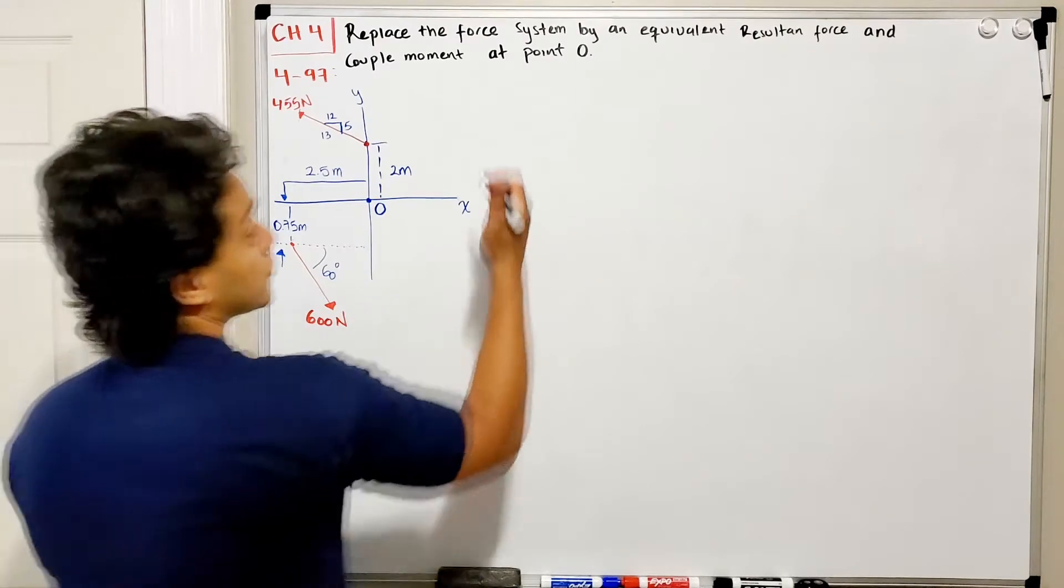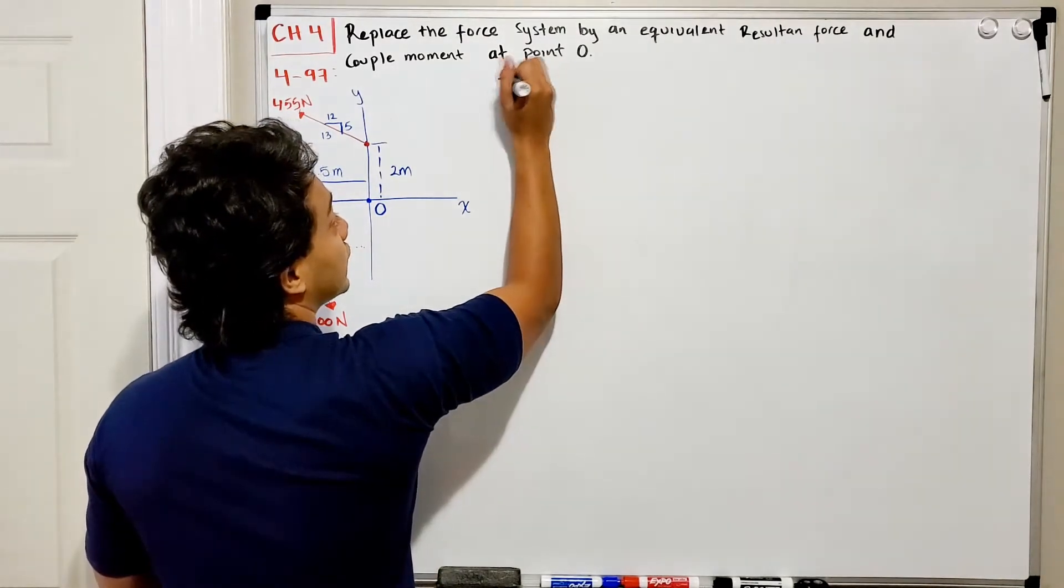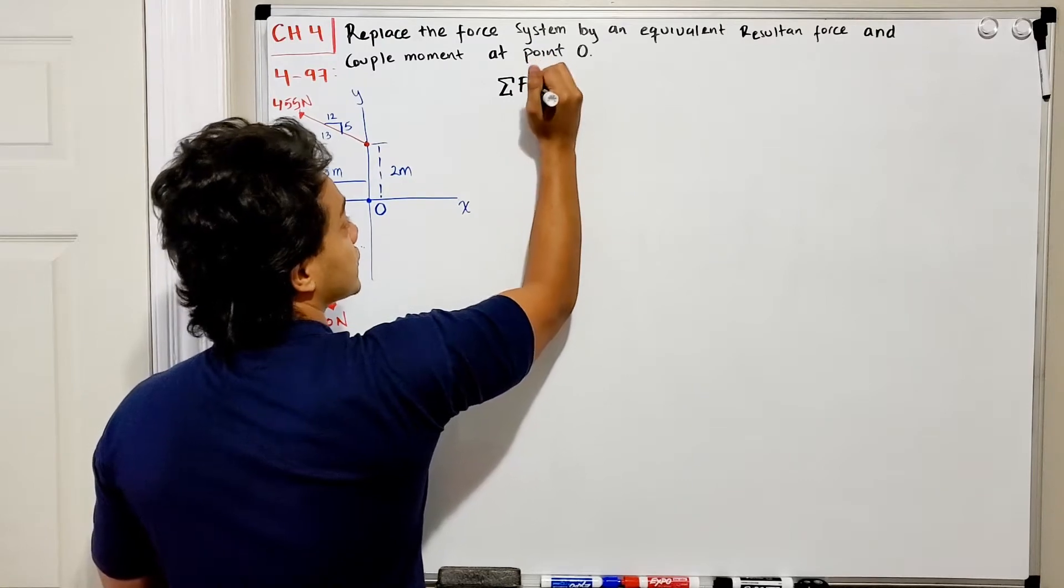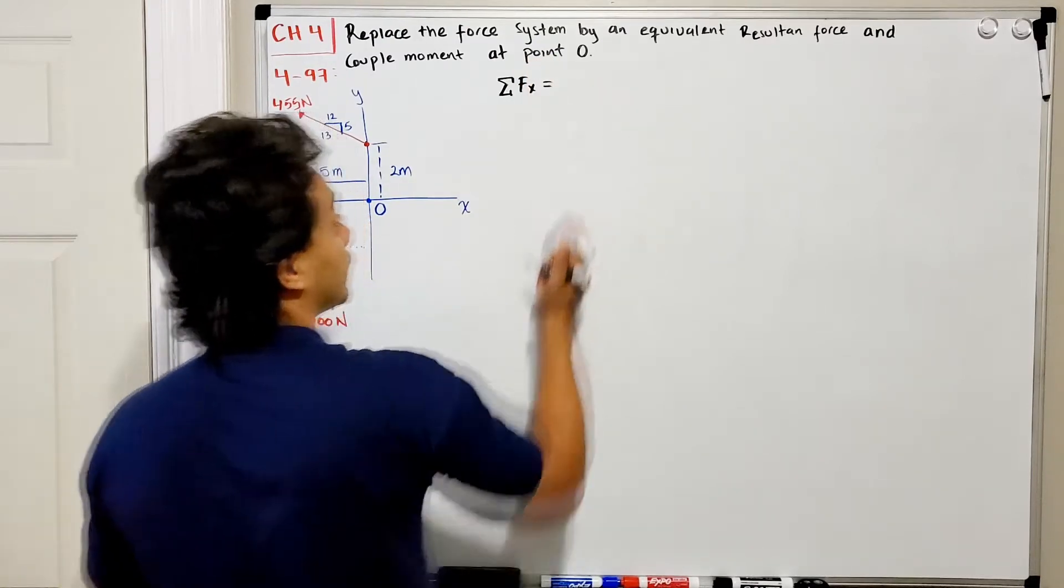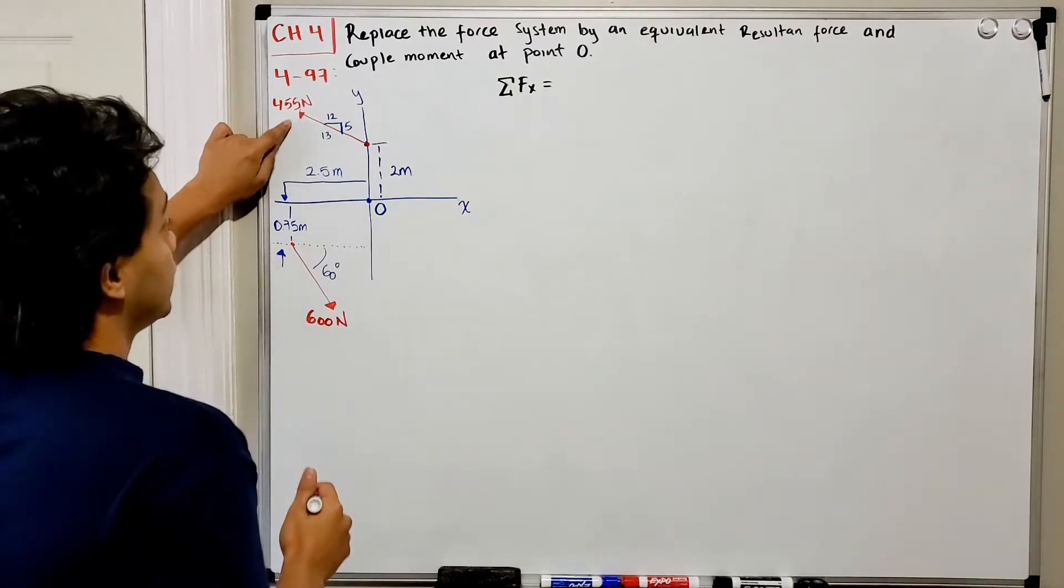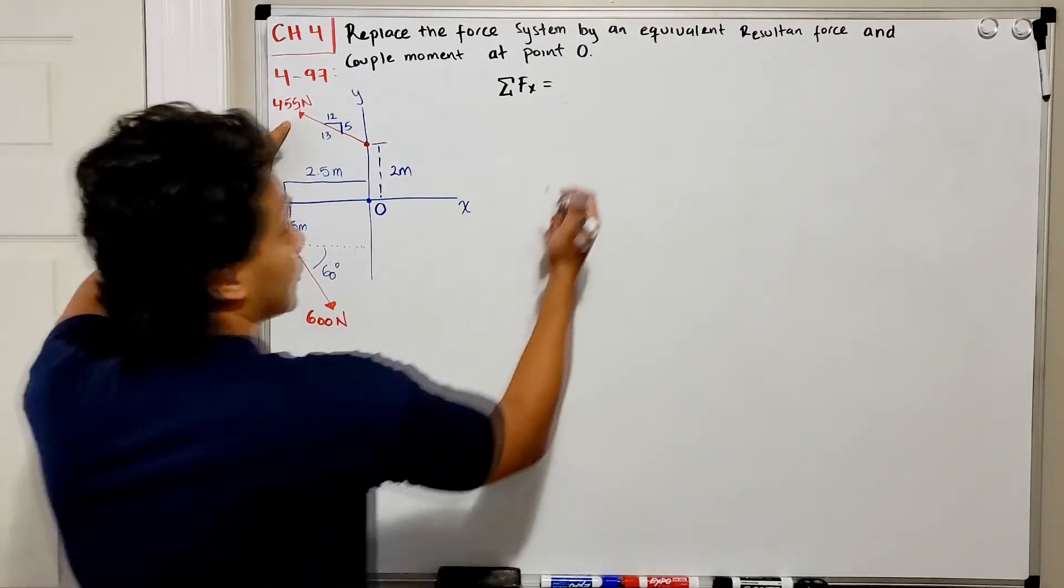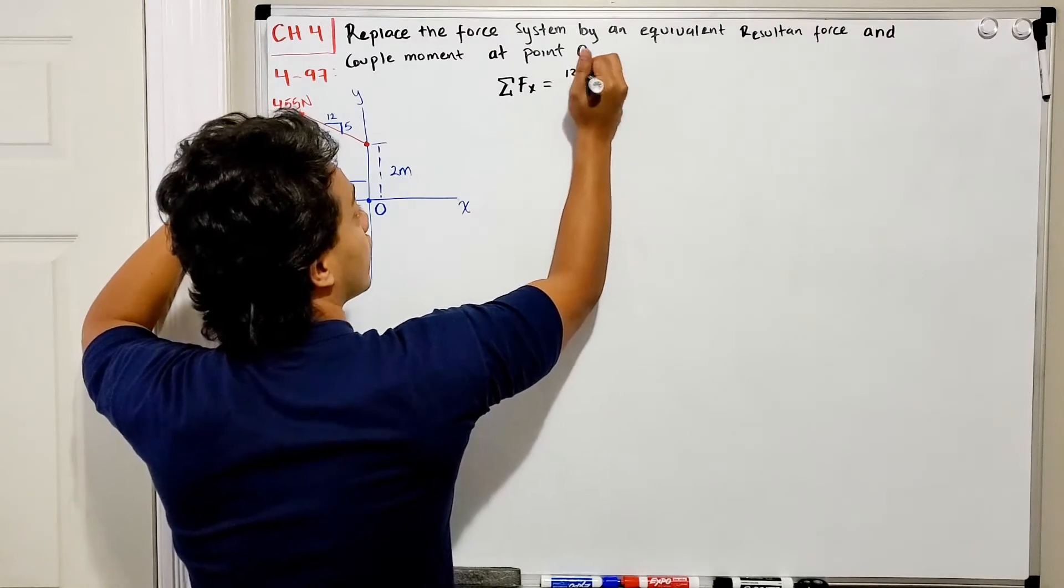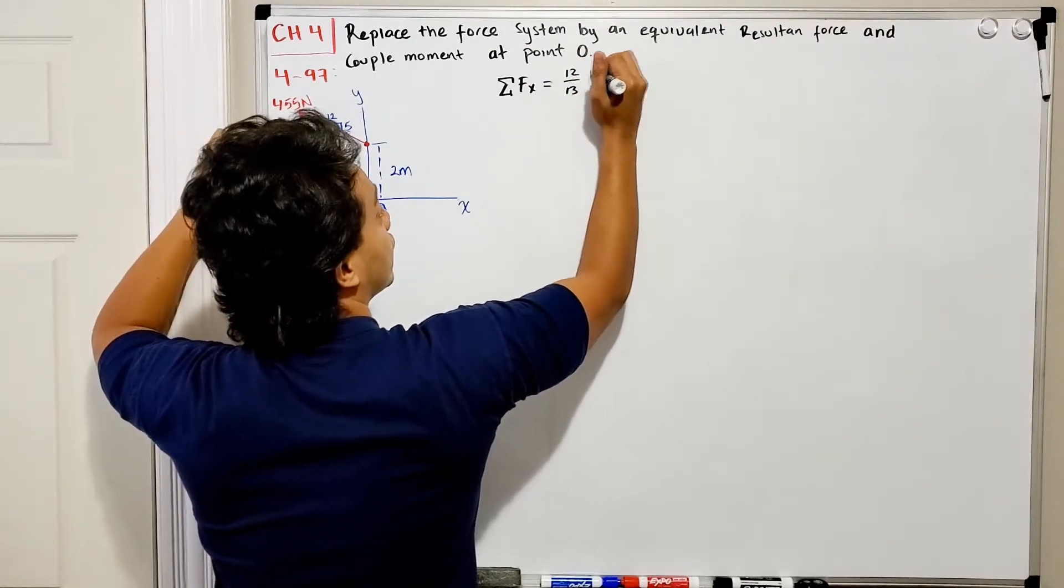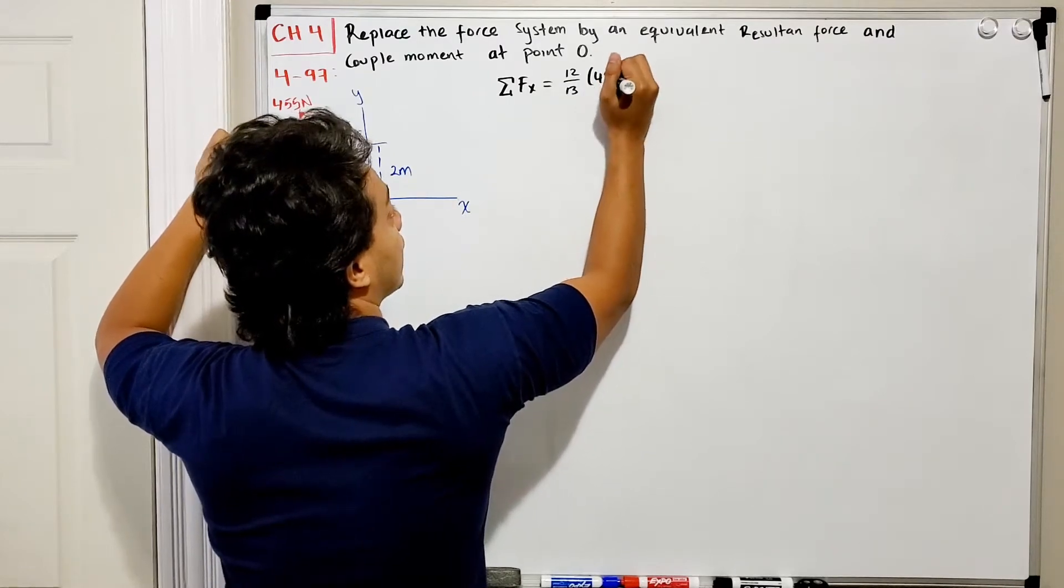To find our resultant force, we need to add all the forces in the X direction and all the forces in the Y direction. Starting with the X direction: I've got a negative force in the X direction. How much is it doing? 12 out of 13 of 455.